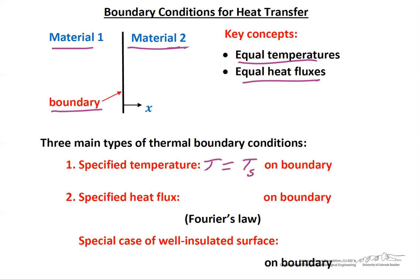Another case is a specified heat flux. If we have a solid with a specified heat flux into it, then by Fourier's law we would have the heat flux equal to the specified value QS double prime. An example of this might be a chemical reactor on the left that gives rise to a specified heat flux through the wall of the reactor.